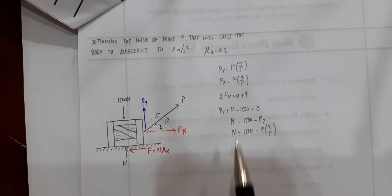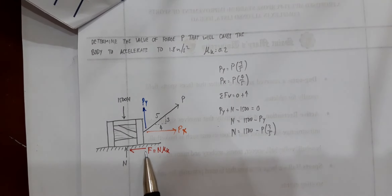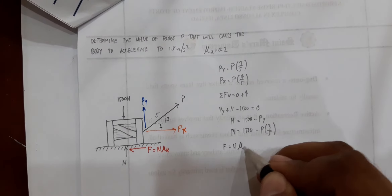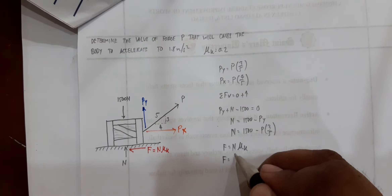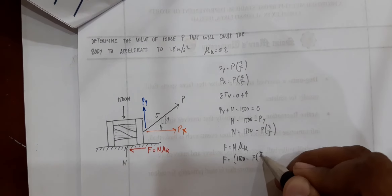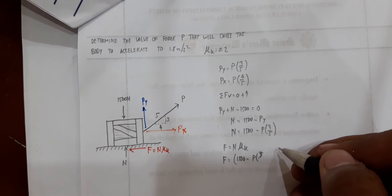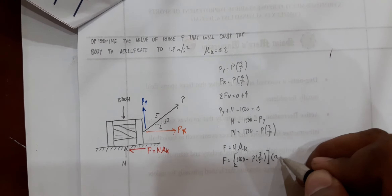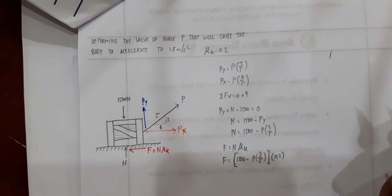Since we now know the value of N, we can calculate the frictional resistance induced by the floor against the crate's movement. F is equal to N times μk, so F equals (1,500 minus P times 3 over 5) multiplied by 0.2. That would be the value for your F.